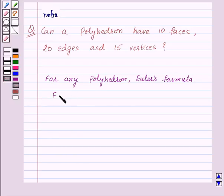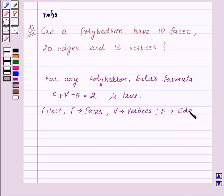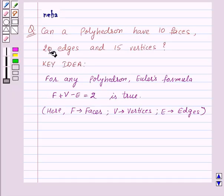F plus V minus E equals 2. Here F stands for number of faces, V stands for number of vertices, and E stands for number of edges. This is the key idea for this question.